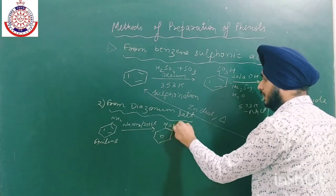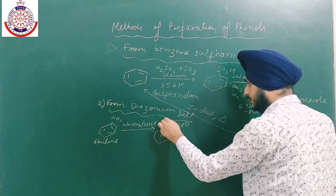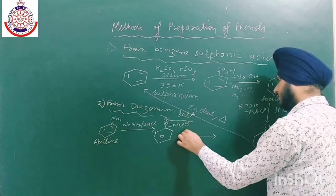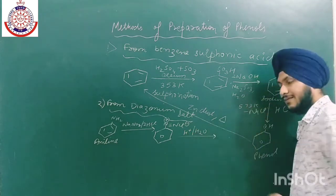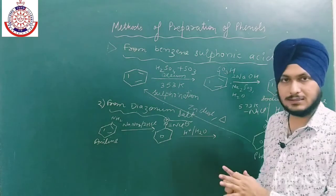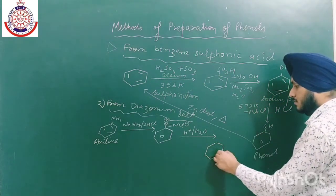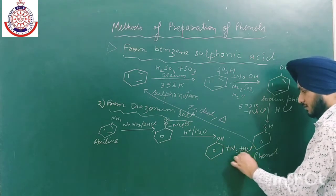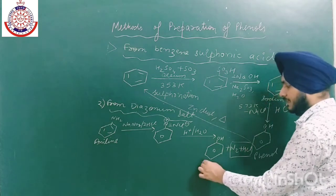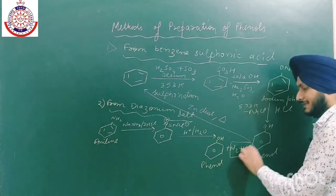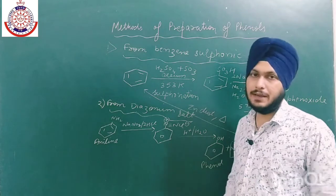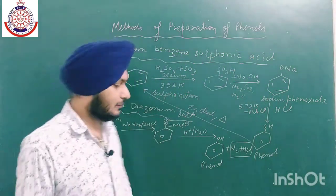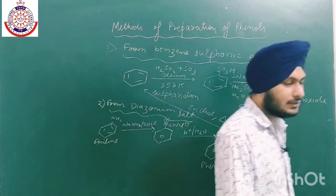We get the diazonium salt with a positive charge on nitrogen. Then we simply do hydrolysis in the presence of an acid like HCl. The byproducts are N₂ and HCl — both gases that easily leave — and the main product is phenol. This method is quite efficient.